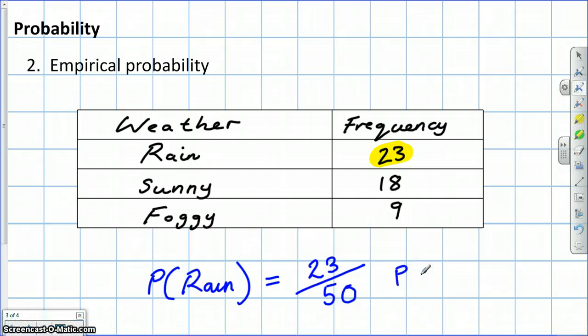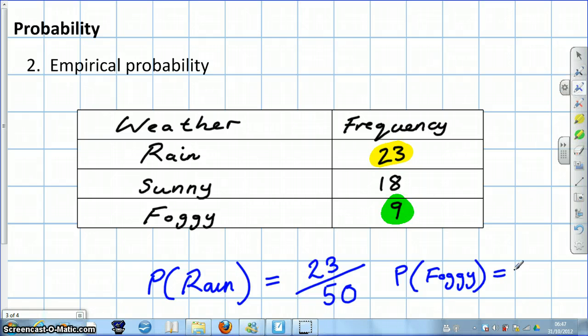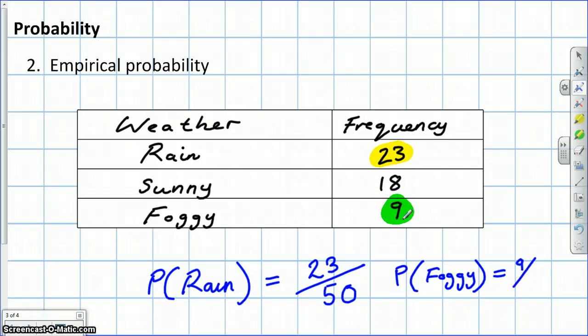What's the probability of it being foggy? Well, we observed nine outcomes where it was foggy, out of a total of, as before, 50.